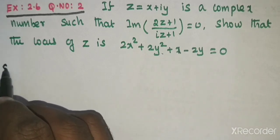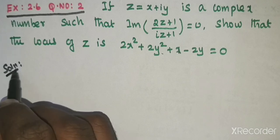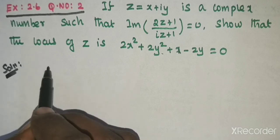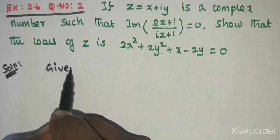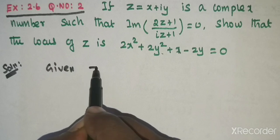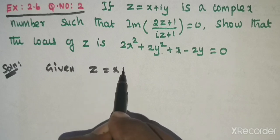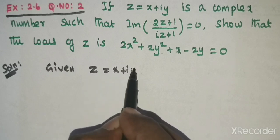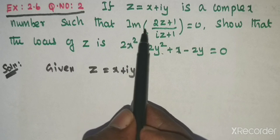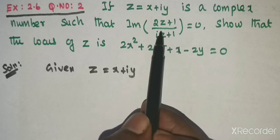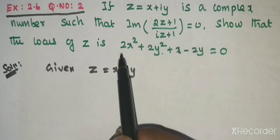This is the solution. Given: z equal to x plus iy, and the imaginary part of 2z plus 1 divided by iz plus 1 equal to 0.